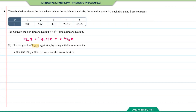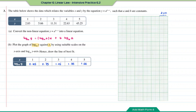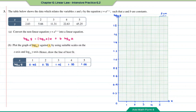For Question B, plot the graph of log base 10 of y against x using a suitable scale. We already have x values; convert y values to log base 10 of y — for example, log(2.83) for the first entry — rounding to 2 decimal places. Use 2 cm to 1 unit on the x-axis and 2 cm to 0.2 unit on the log y axis. Plot the points and draw the line of best fit.